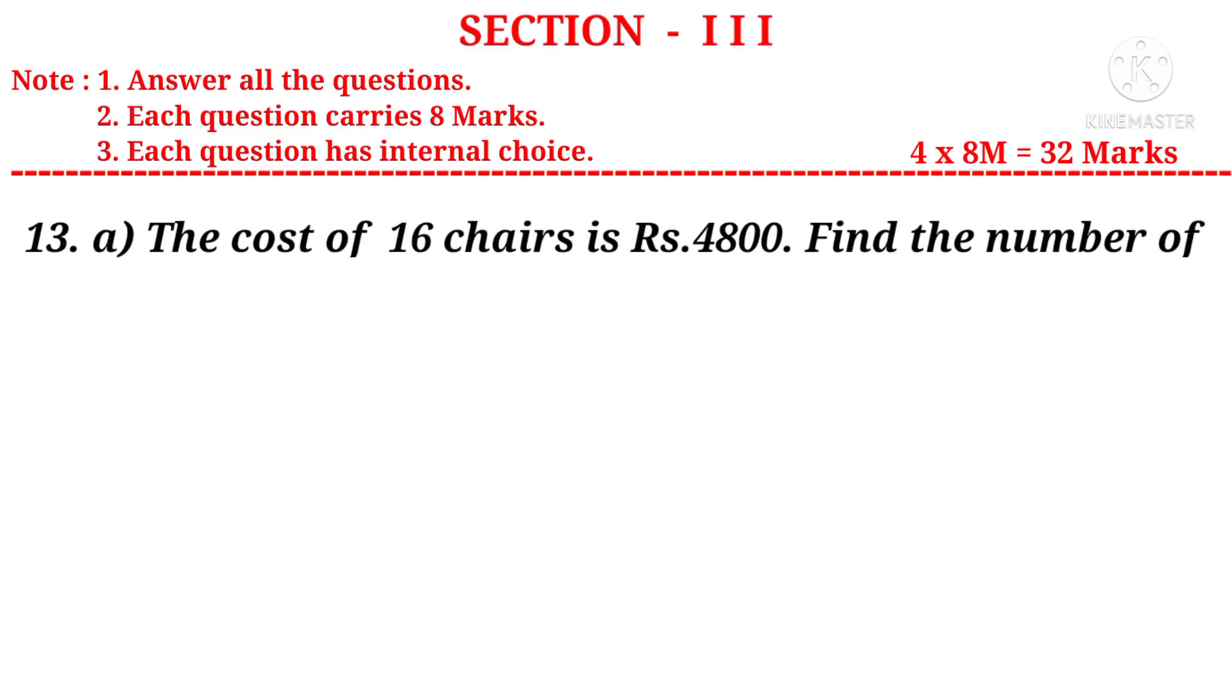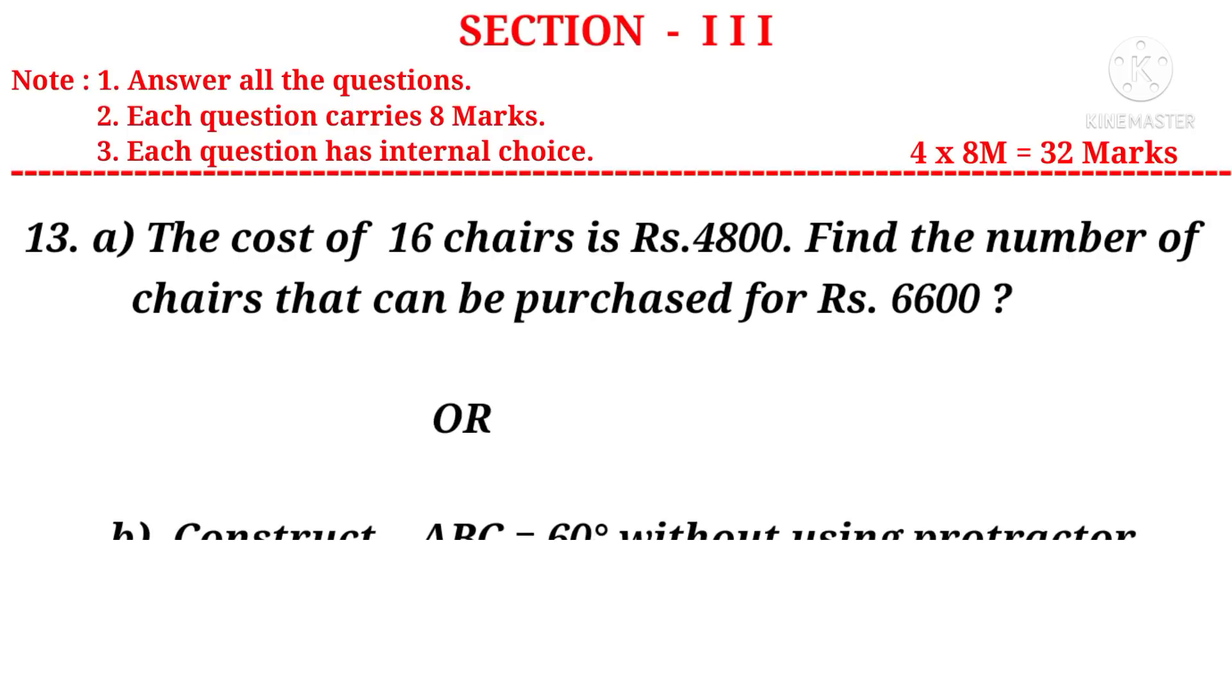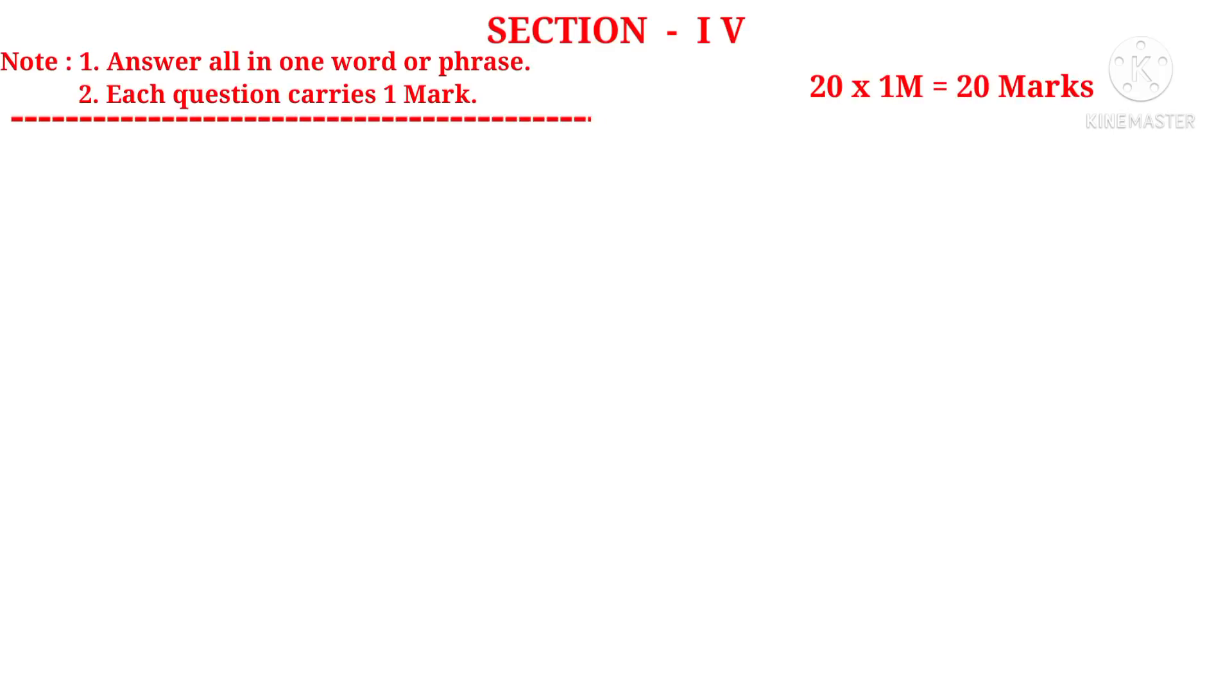Now let us see 13a: The cost of 16 chairs is Rs. 4,800. Find the number of chairs that can be purchased for Rs. 6,600. Or b: Construct angle ABC is equal to 60 degrees without using protractor. Now let us take section 4. Note: Answer all in one word or phrase. Each question carries one mark. There are 20 questions. So 20 into one mark is 20 marks.